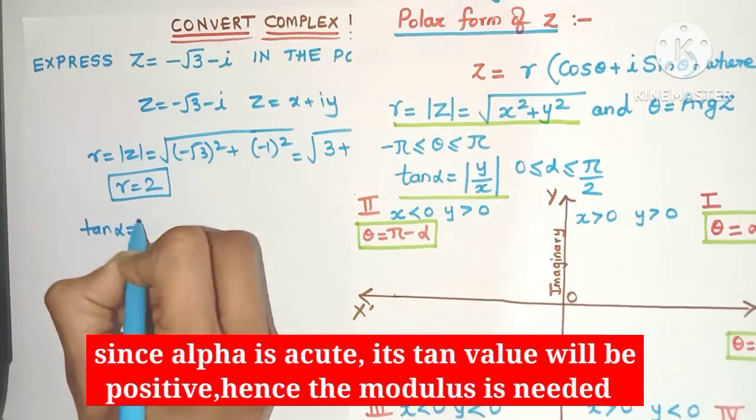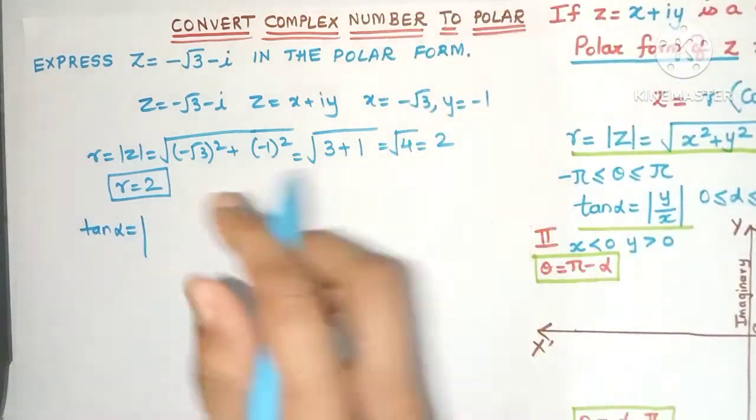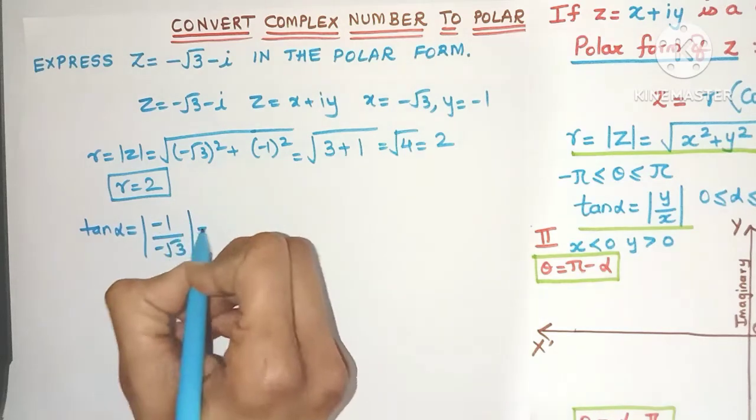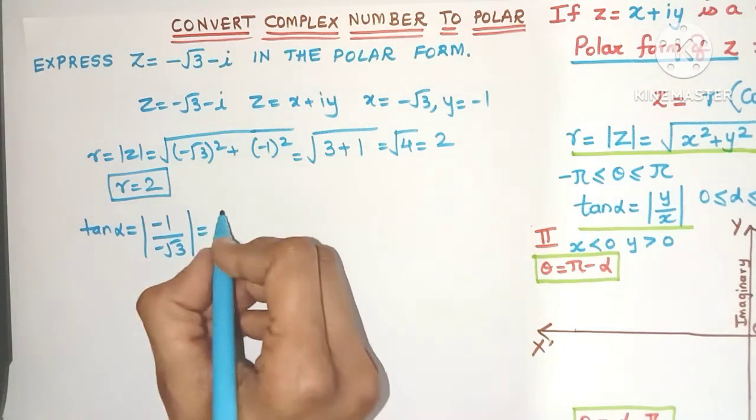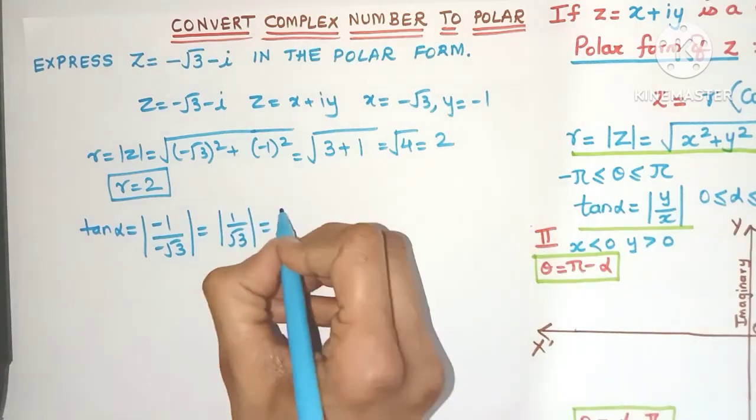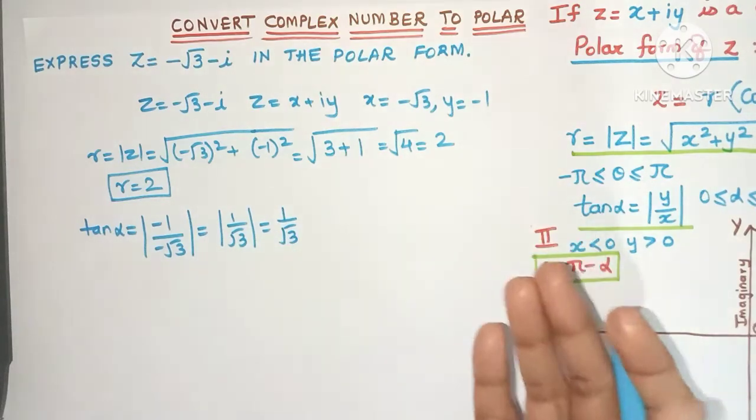So tan α here will be modulus of what is y? Yes it is -1. What is x? It is -√3. So anyway the minus and minus will get cancelled, you will get 1/√3. Modulus of 1/√3 will be again 1/√3.